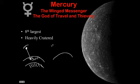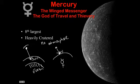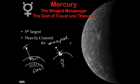Mercury, however, has no atmosphere. So that means any rock that's going to hit the planet does hit the planet, and it leaves a huge hole every time. So if you take a look at it, it's incredibly pitted and cratered, just like our moon. And that's because it has no atmosphere.